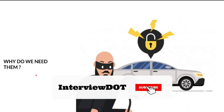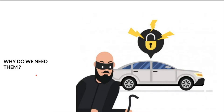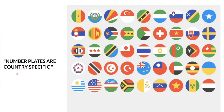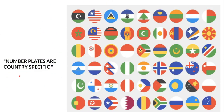Why do we need LPR software? The main advantage is to fight against crime — if any incident occurs, we can use LPR to track the event. Other names for LPR include car plate recognition, car plate reader, and optical character recognition for cars.